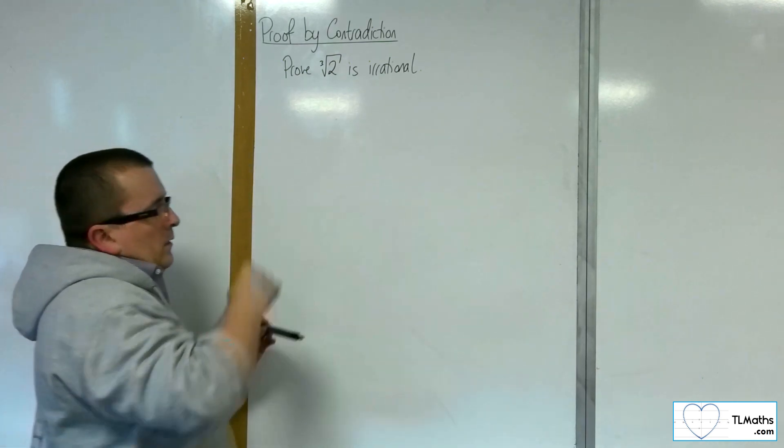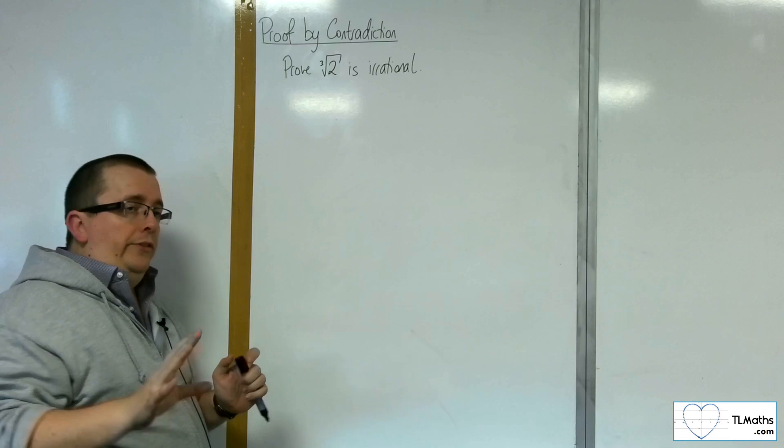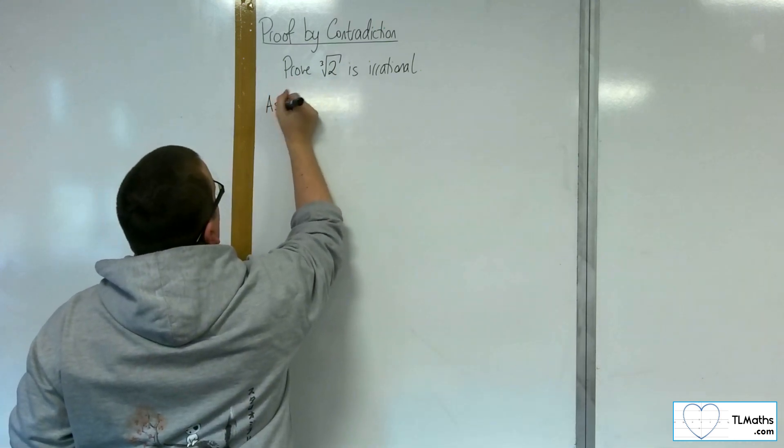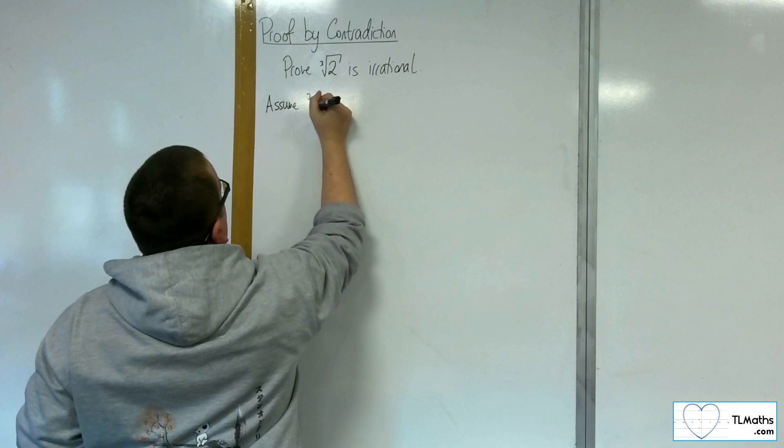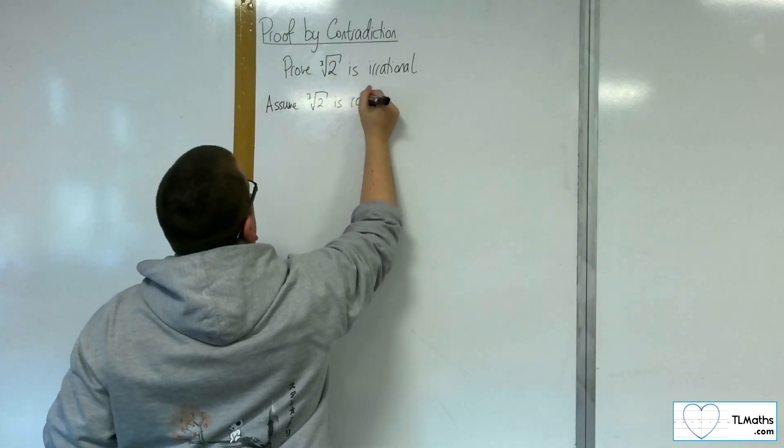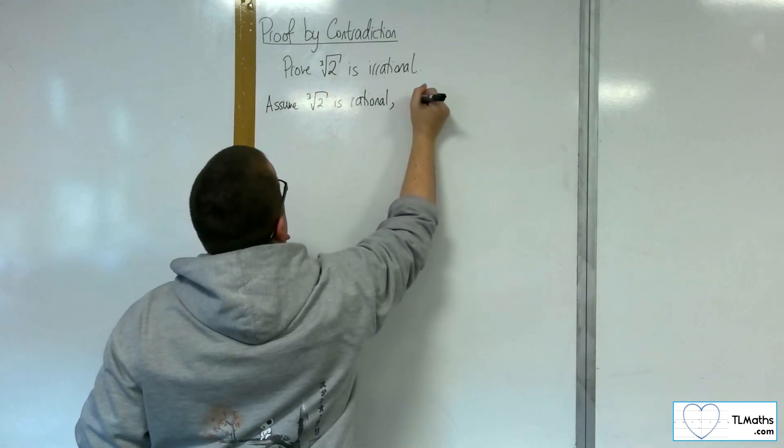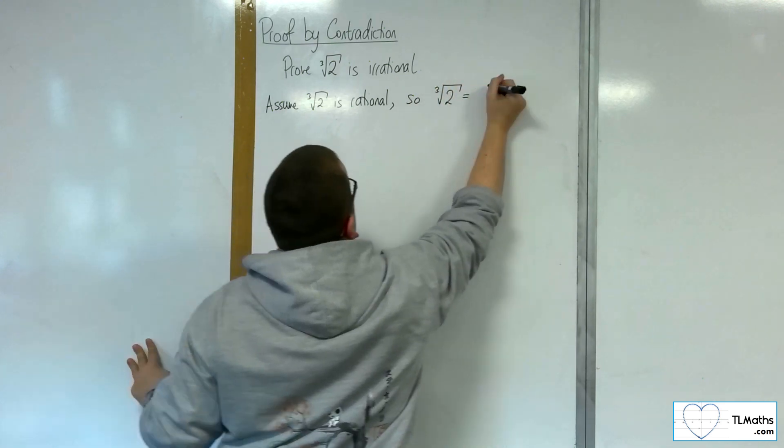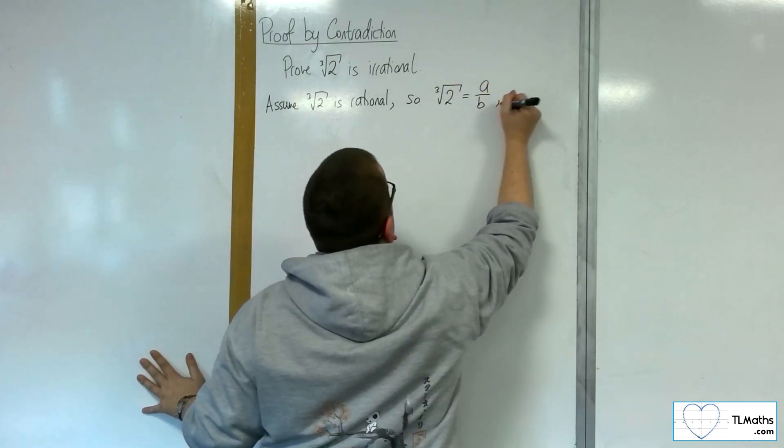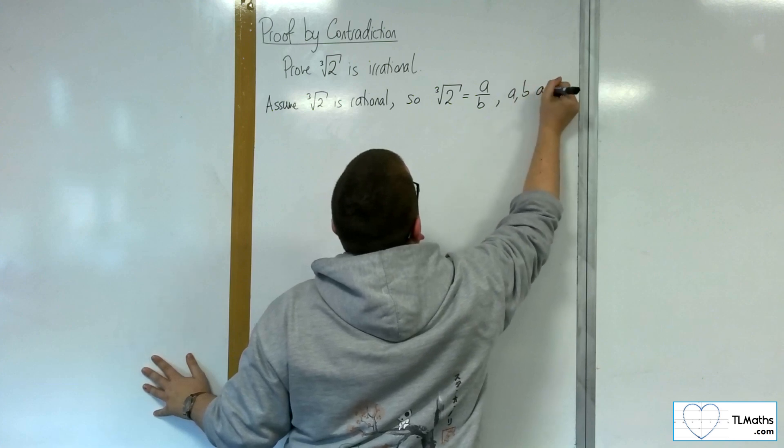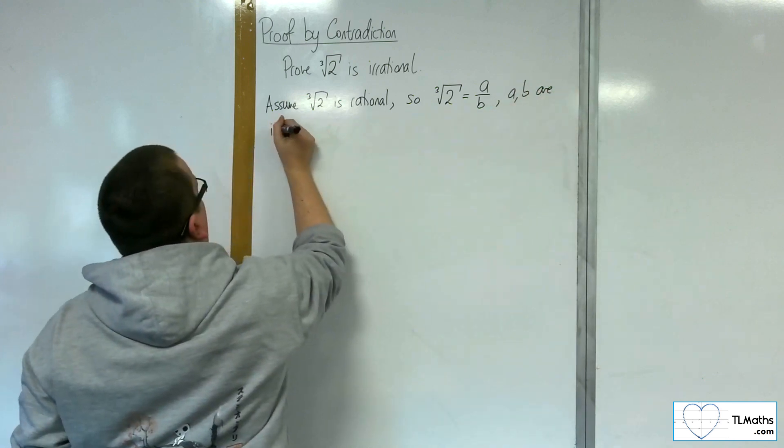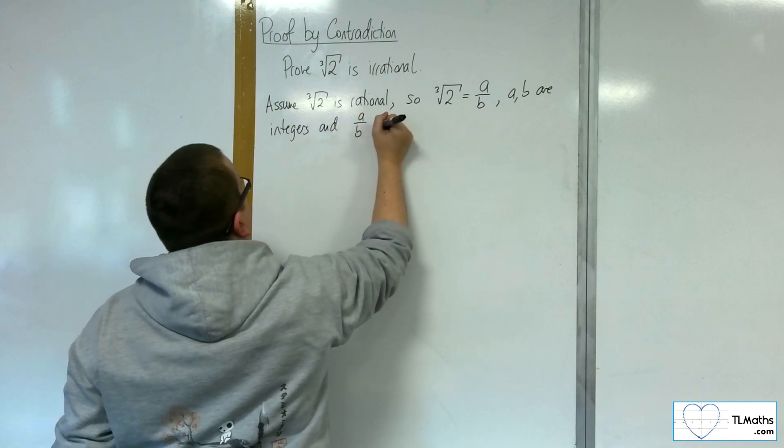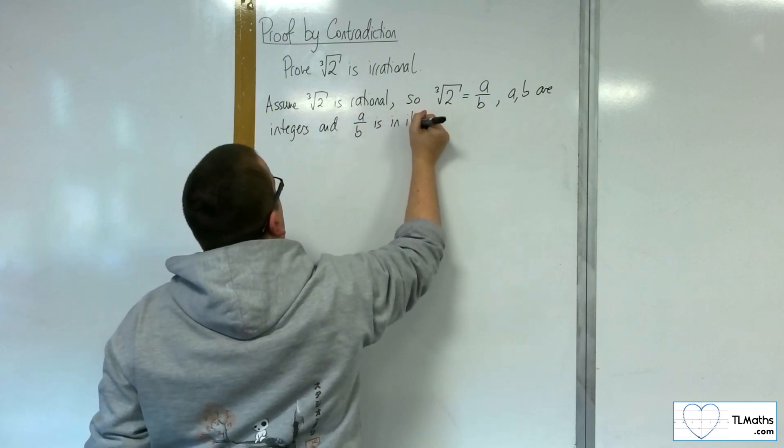OK, so we're going to go along the same lines as we've done before. So we will assume that the cube root of 2 is rational. So the cube root of 2 can be written as a fraction of a over b, where a and b are integers, and a over b is a fraction in its simplest form.